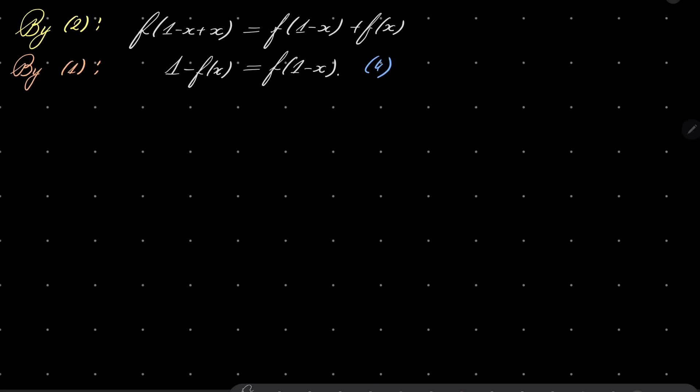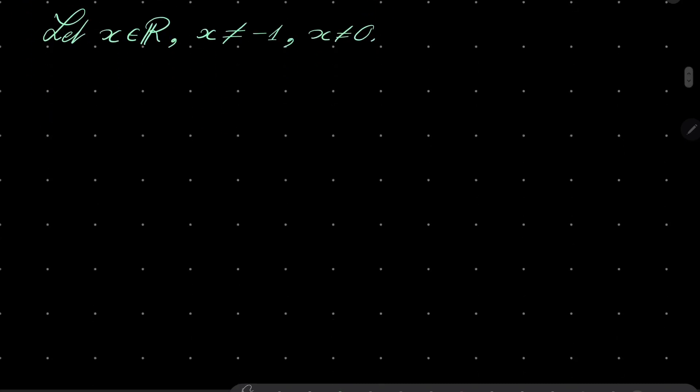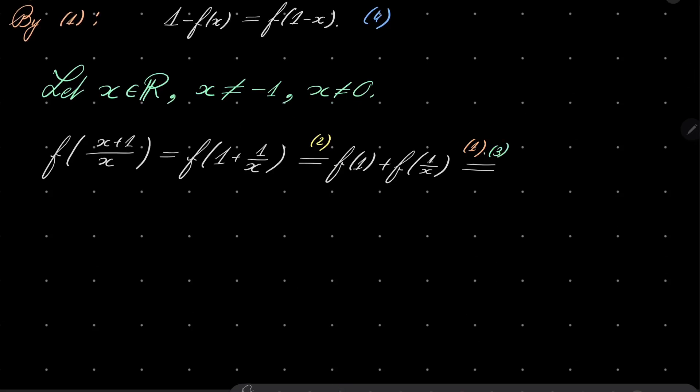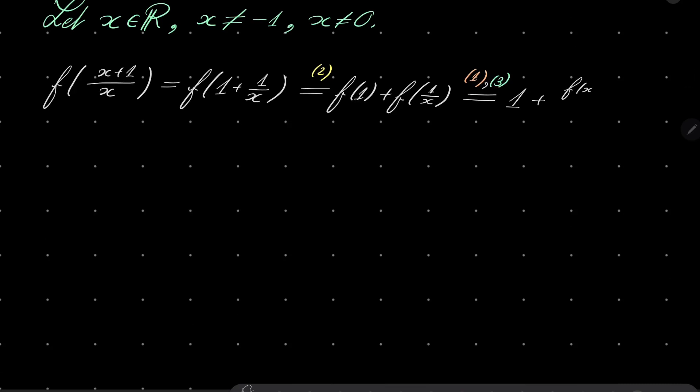And now let x be a real number but not -1 and not 0. I will consider f(x + 1/x). I'll notice that this can be written as f(1 + 1/x). By our equation number 2, f of something plus something is f(1) + f(1/x). And now by conditions 1 and 3, we will see, well f(1) is 1 while f(1/x) is f(x)/x². So it can be written as (x² + f(x))/x². Let's remember that.